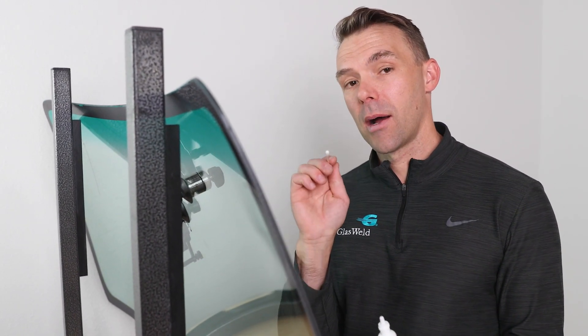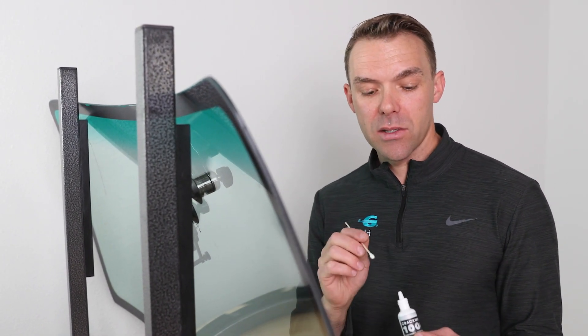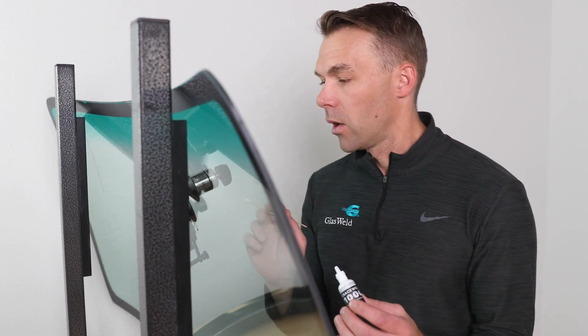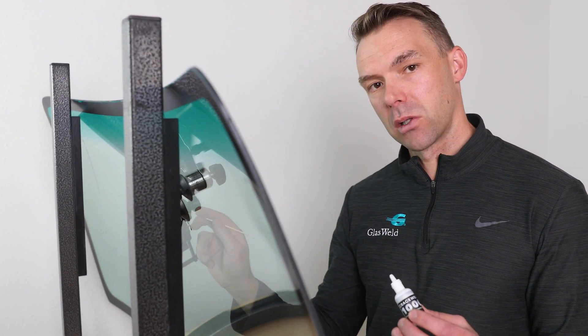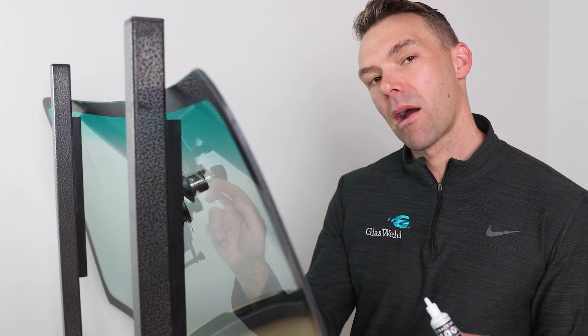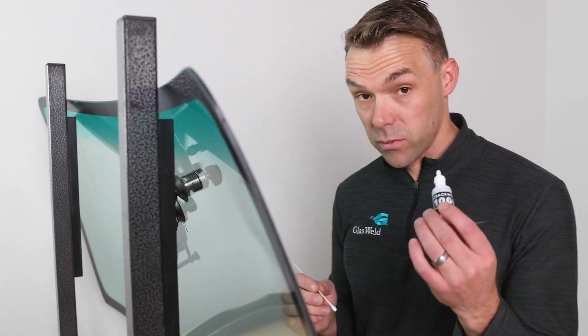What we want is the resin just to wick through the crack, pushing the air out ahead of it until the end of the crack. So we want to avoid getting the resin ahead of the crack itself, and so what that means is that we need to make sure that we sort of start small and move the resin on slowly, slowly, slowly, pushing the air out as we go. So that's one thing to keep in mind.